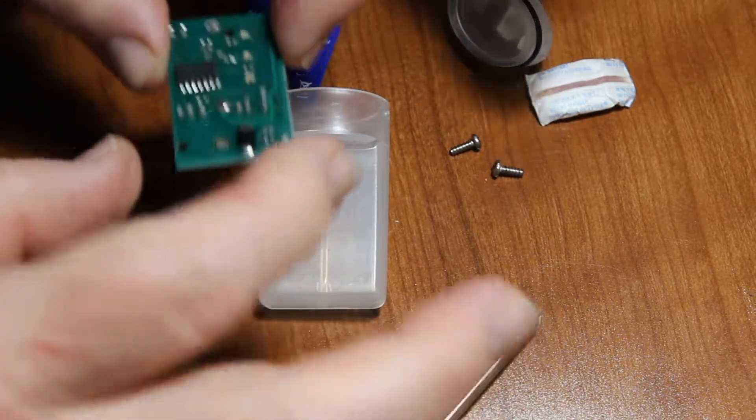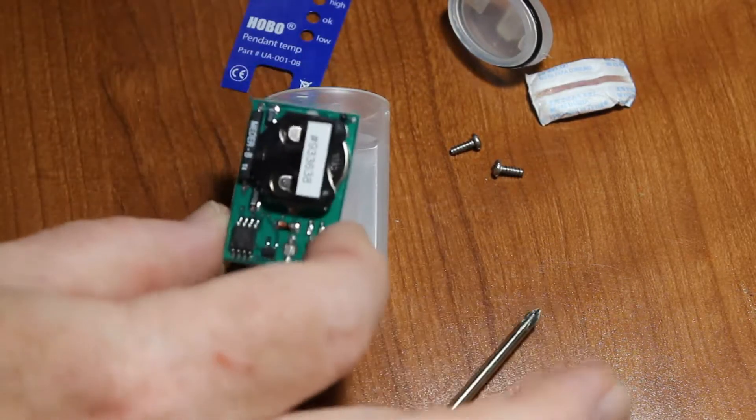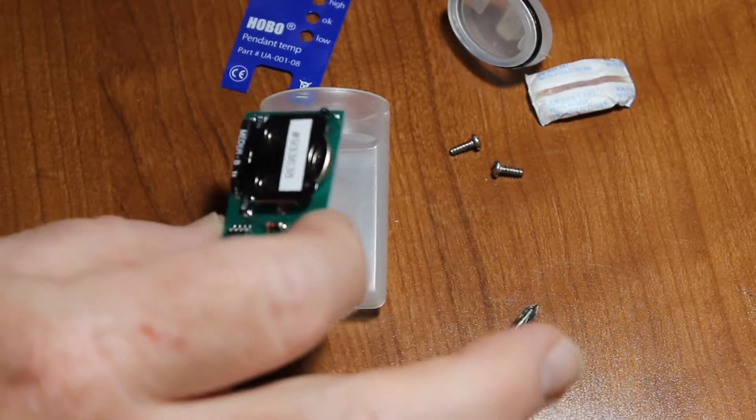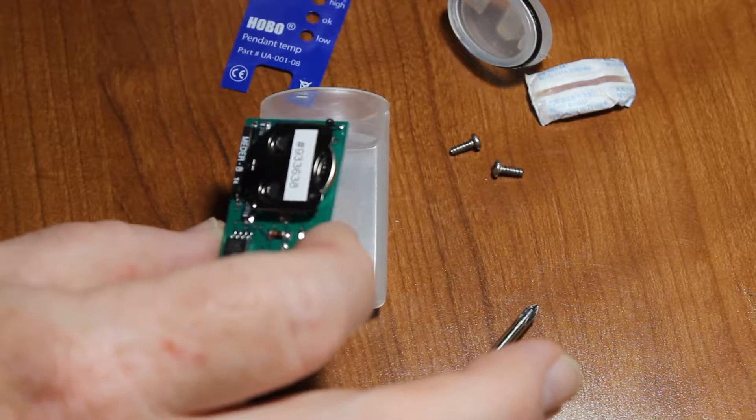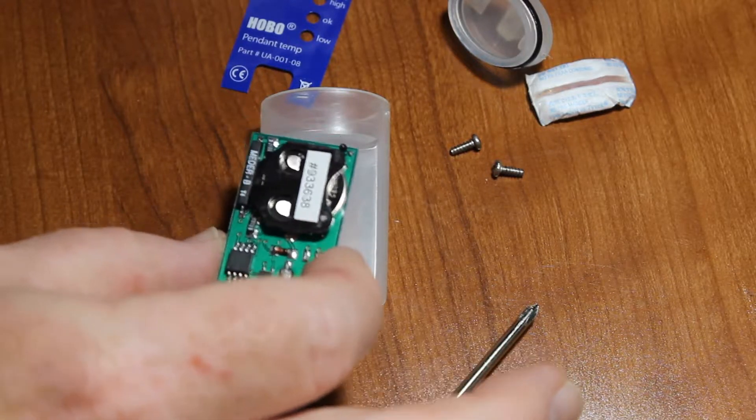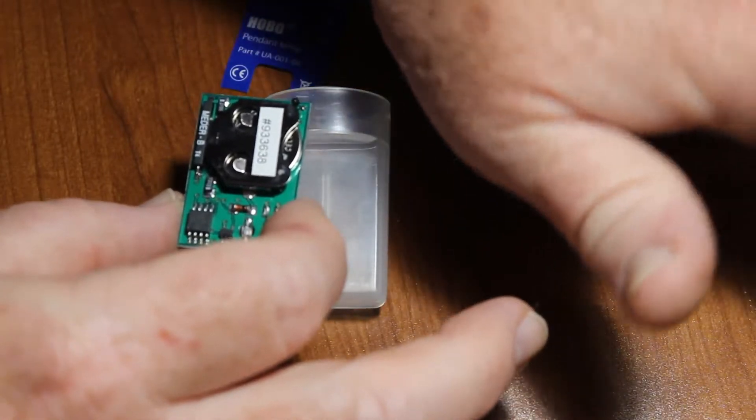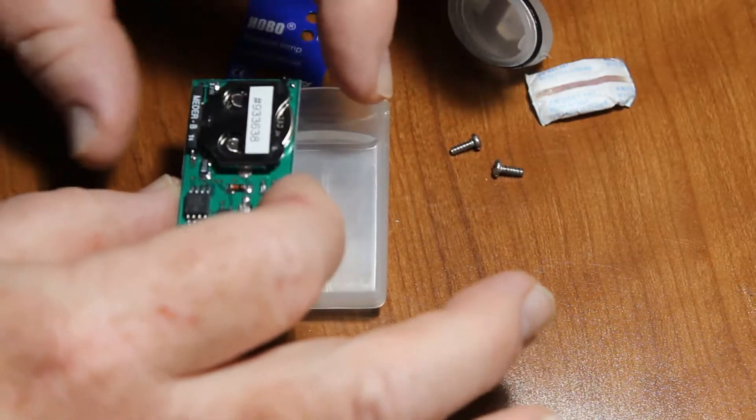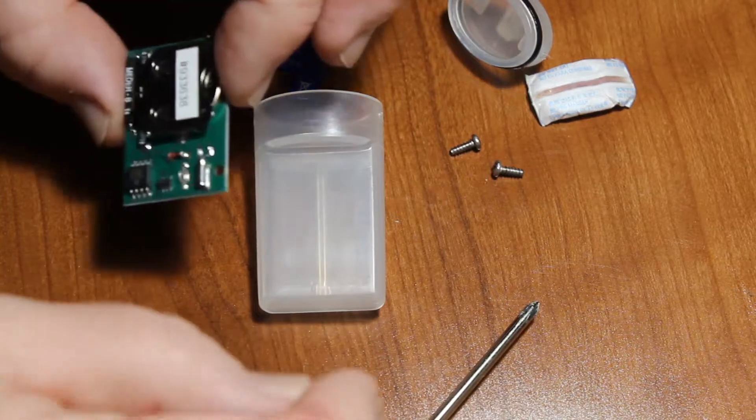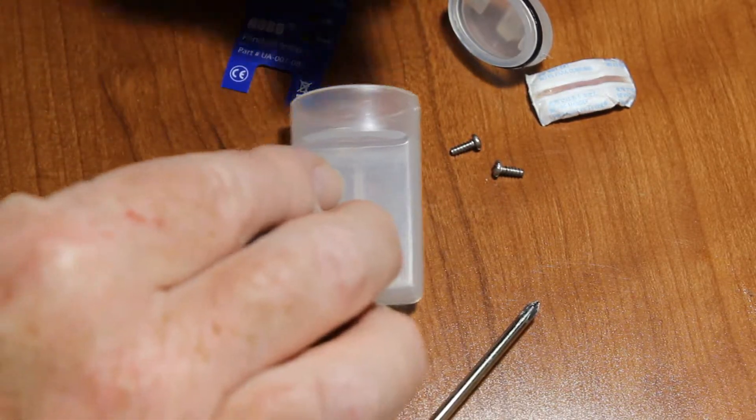Make sure to hold this by the edges. These are static sensitive, so you want to be very careful. If you're in a very dry environment, you want to mitigate any kind of static discharge. You may want to touch your fingers to metal before you start handling this, just to make sure you get rid of any static discharge that's on your fingers.